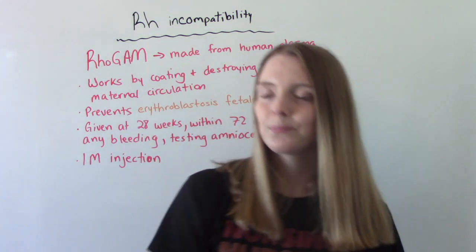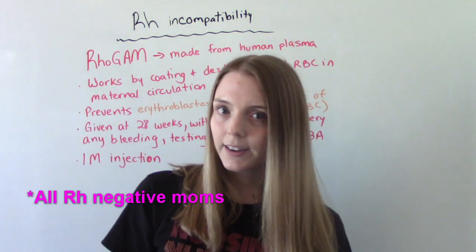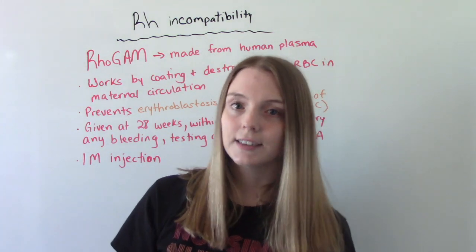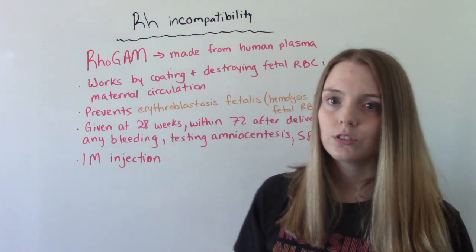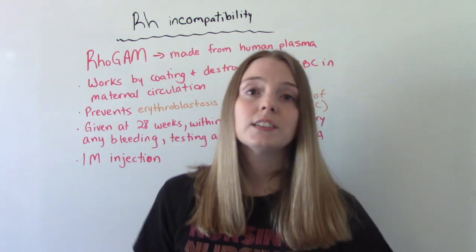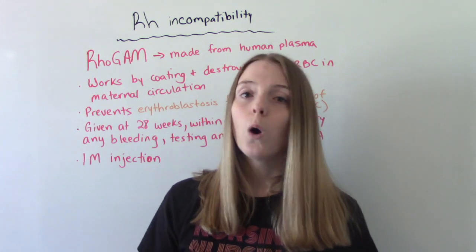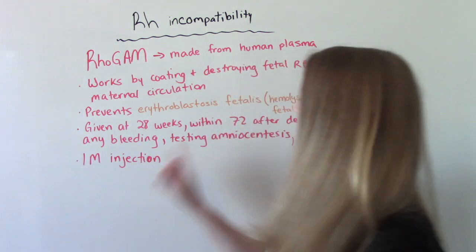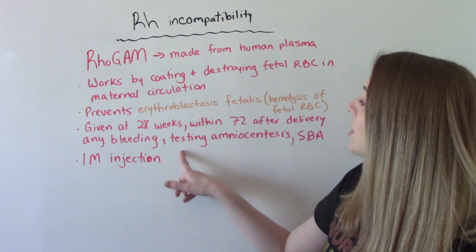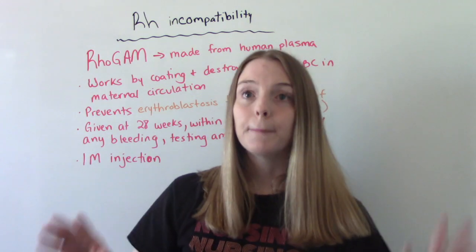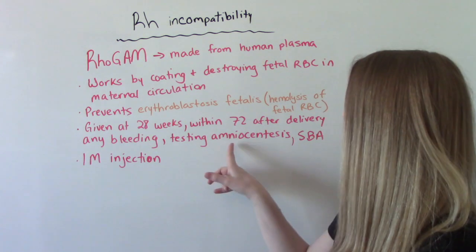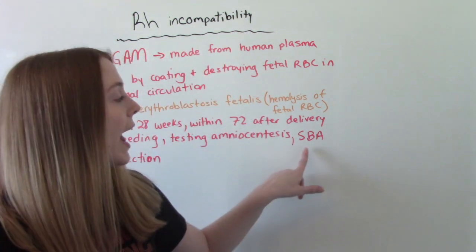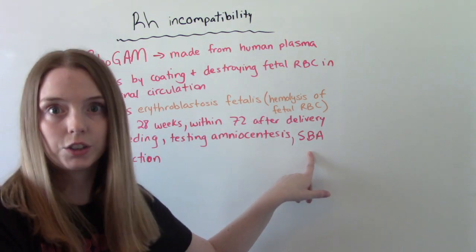When do we give RhoGAM? We give it to all moms at 28 weeks. We give it within 72 hours after delivery if the baby is RH positive. After any bleeding episodes — this could be minor bleeding like spotting, or major things like placenta previa or an abruptio placentae. If mom is bleeding at all during pregnancy, she's getting a RhoGAM. If we do testing like an amniocentesis, she may need a RhoGAM after that as well. And after spontaneous abortion or miscarriage, moms need to get RhoGAM.